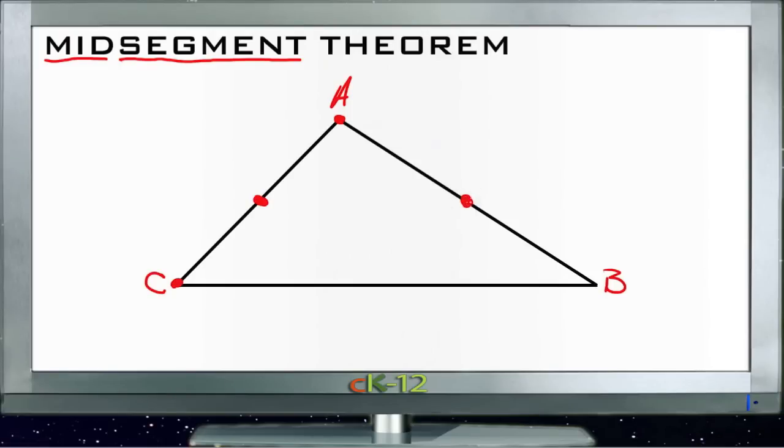If we then connect those two center points, those two midpoints of those two sides with a line, this line then becomes our midsegment - a segment of a line formed by the two midpoints of the sides of a triangle.